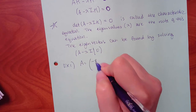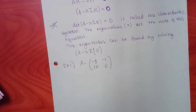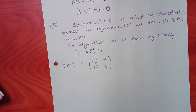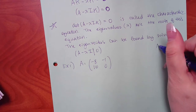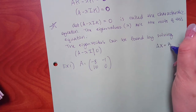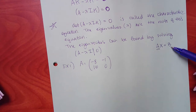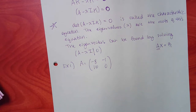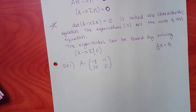Here's Example 1 — a matrix where the directions ask us to find the eigenvalues and eigenvectors. The first thing we do is compute the determinant of A minus lambda I. Previously we were given solutions directly, but now we find them from scratch.